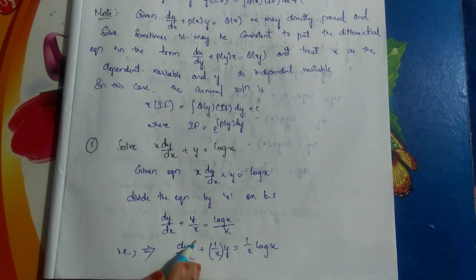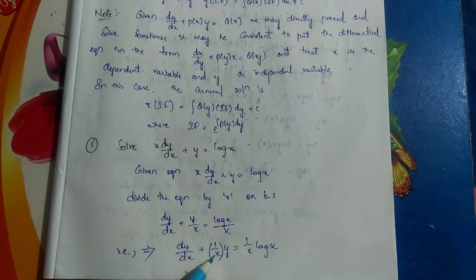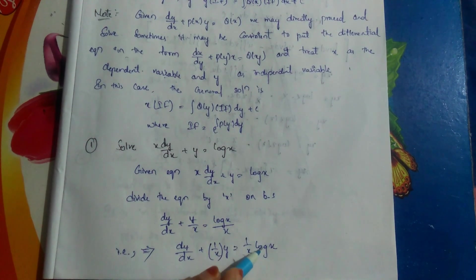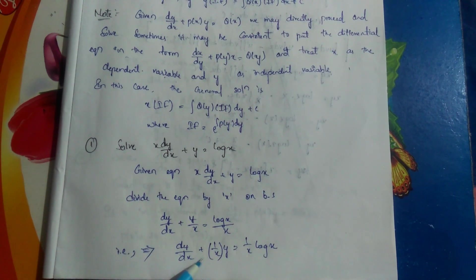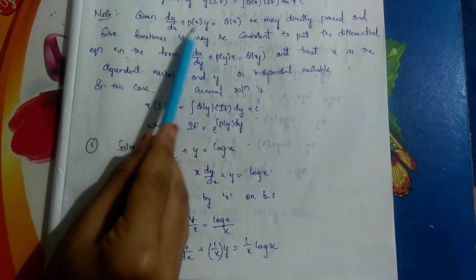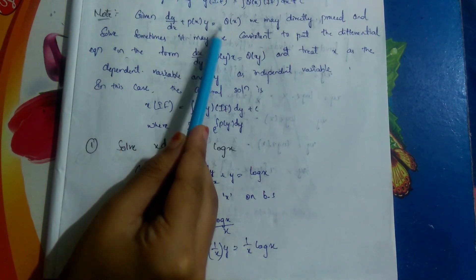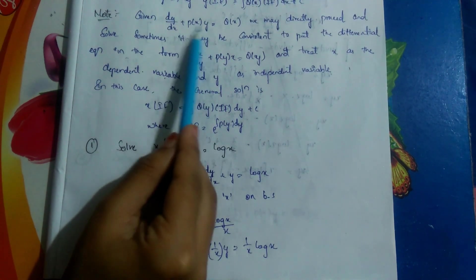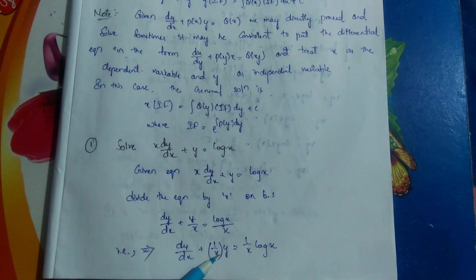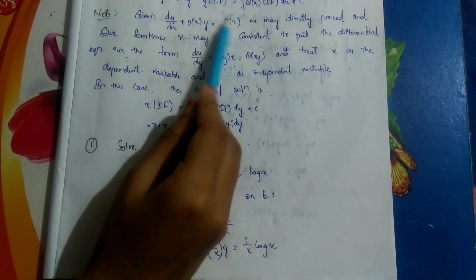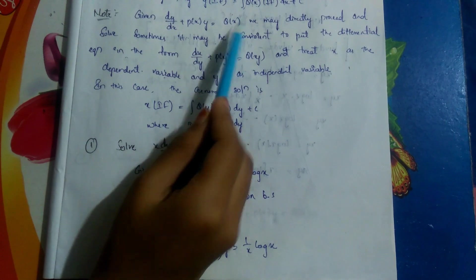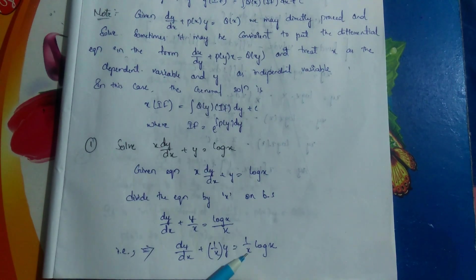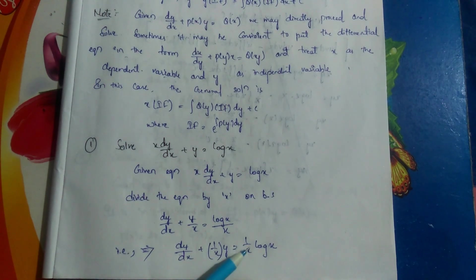That gives us dy/dx plus (1/x)·y equals (1/x)·log x. Comparing with dy/dx plus P(x)·y equals Q(x), P(x) is 1/x and Q(x) is (1/x)·log x.